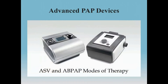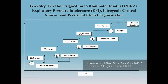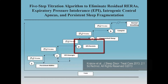Our experience has been that the use of advanced PAP devices, such as ASV and auto-bi-level, are very good at resolving these issues. In this particular algorithm, you see a progression specific to the use of the ASV device, where there would be persistent RERAs. When treated with a traditional PAP mode, expiratory pressure intolerance emerges. Expiratory pressure intolerance may actually persist and aggravate sleep fragmentation.